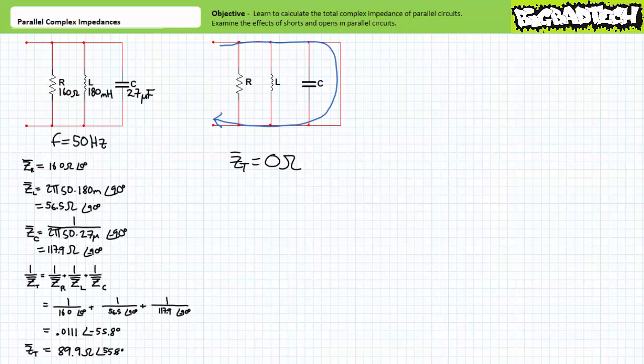In summary, shorts in parallel circuits totally wreck that parallel circuit, no matter where the short occurs. Impedance in shorted parallel circuits immediately drops to zero ohms.